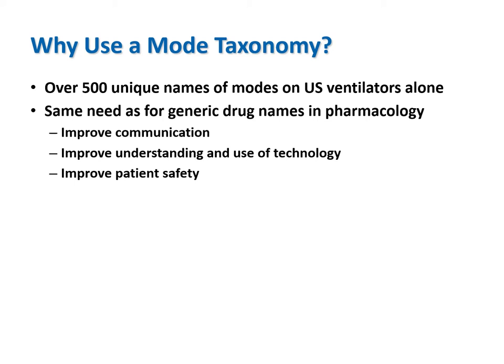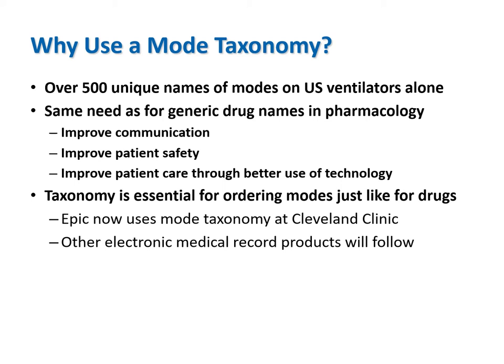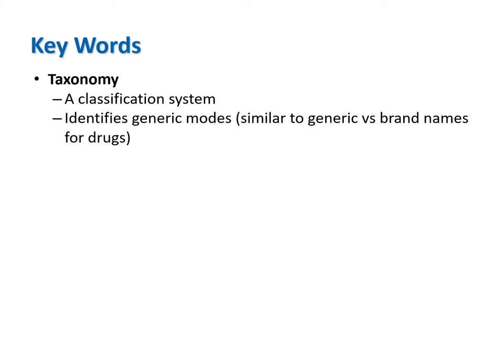This will allow us to better understand and use available technology to ultimately improve patient care. A taxonomy is also important for ordering modes and charting patient outcomes, with the precedent being ordering and charting drugs. Quality improvement through data mining of electronic medical records is severely hampered when random terms are used for modes. We currently have a manuscript in review on this topic.